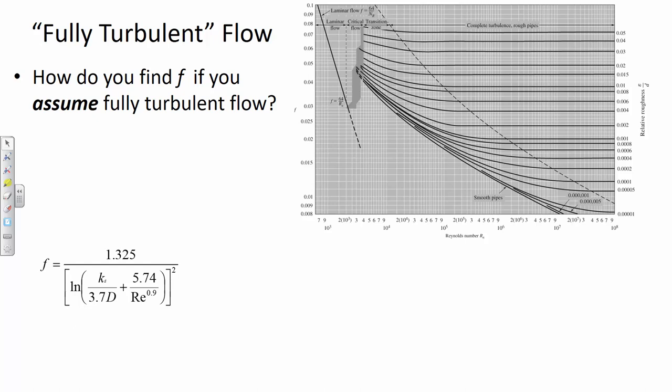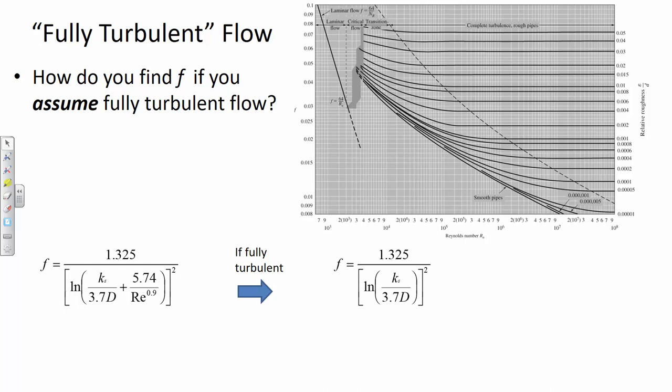Here's the Jain equation. What happens if you turn up the velocity really high? Where is velocity in the Jain equation? It's hiding — it's in the Reynolds number. What happens to the Jain equation if you substitute a really big Reynolds number into the denominator of the second term inside the brackets? It gets really small. So a big Reynolds number means that second term becomes negligible. The fully turbulent assumption is a tool we can use to solve problems that would otherwise be too indeterminate. We can't proceed unless we make the assumption, but this allows us to begin calculations.